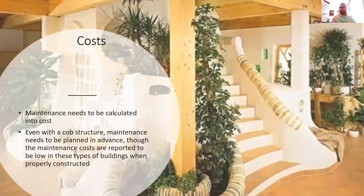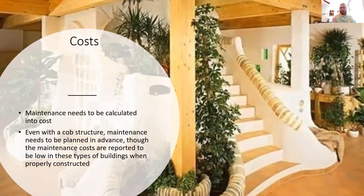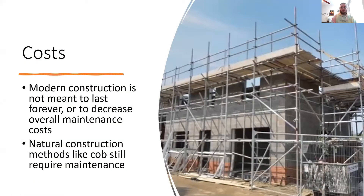Maintenance also has to be factored into the cost of any structure you're building. With newer construction materials and methods, I'm noticing a pattern of things being made to last upwards of about 35 years with proper maintenance. So the fact that there are cob structures that have been standing for hundreds of years — if proper maintenance is going to be required anyway — I really don't think there's any contesting the durability of the material historically, especially when compared with our modern materials.